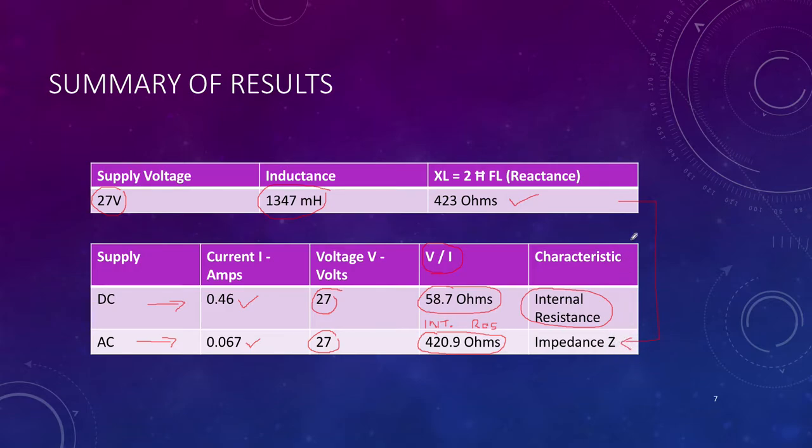This demonstrates that when working with AC, the applied voltage divided by current tells you the impedance. Because this was a highly inductive circuit, our AC impedance comes out very close to our calculated reactance.